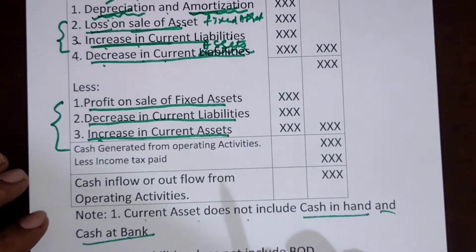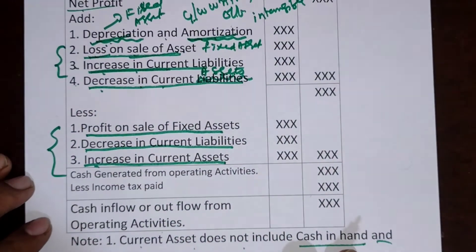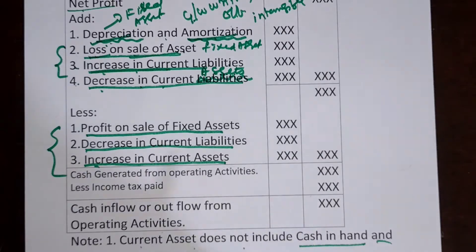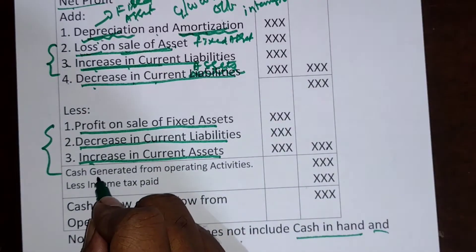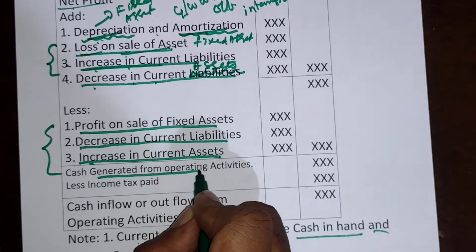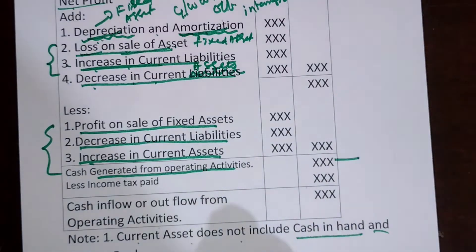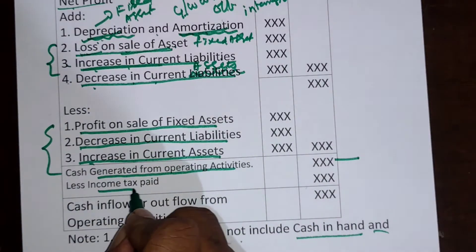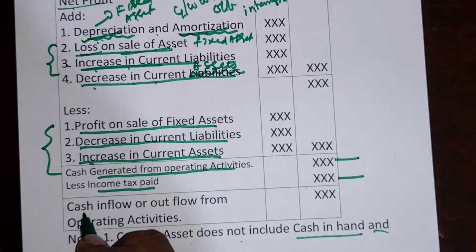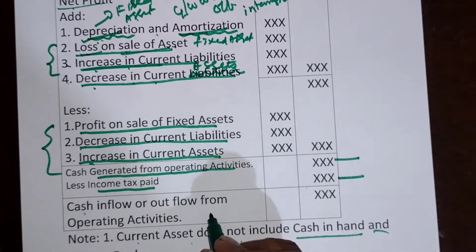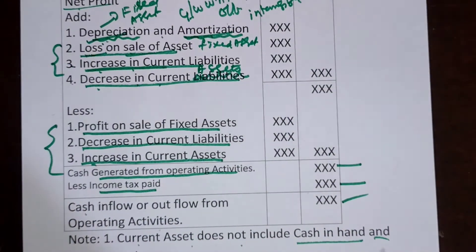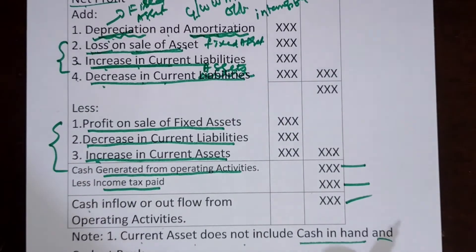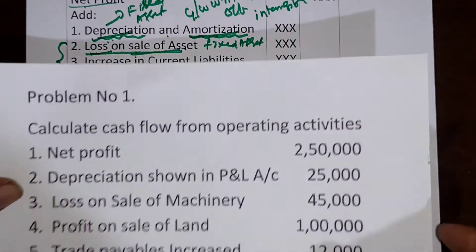For Class 12 level this is a very simple problem, but for under-graduation and higher studies the problem will be very lengthy. When you total and subtract these items, the answer you get is called 'cash generated from operating activities.' From that cash generated from operating activities, you deduct the income tax paid, and the answer you get is the cash inflow or outflow from operating activities. This is a shortcut format made for Class 12 students.